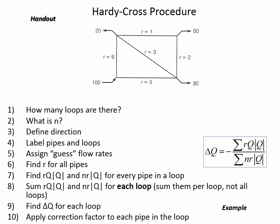Still in iteration one, now loop two. I've got three pipes: pipe 1-2, pipe 2-3, and pipe 1-3. N is always 2. The R values are: 1 for pipe 1-2, 2 for pipe 2-3, and 3 for pipe 1-3. For the flow rates, pipe 1-2 is 15 and pipe 2-3 is negative 35.